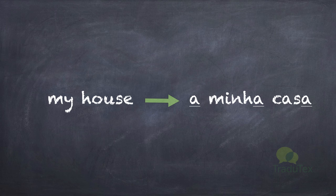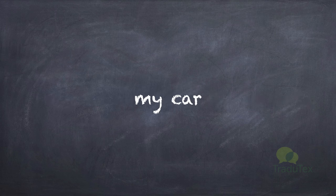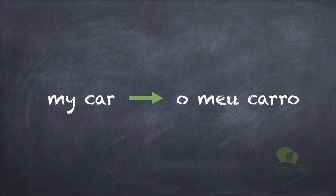So, let's say we want to translate 'my car'. Again, the first thing we have to think about is how to say 'car' in Portuguese. In Portuguese we say 'carro'. As you can see, 'carro' ends with an O, so it's a masculine and singular word. So it's not possible, for instance, to say 'a minha carro' — that would be a mistake. So what we should say is o meu carro. If 'carro' is singular and masculine, the possessive 'my' should be translated with o meu. O meu carro.